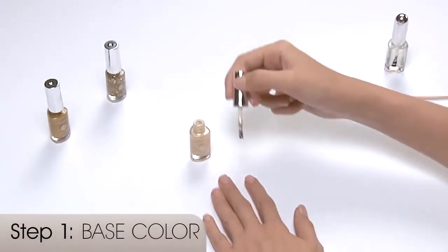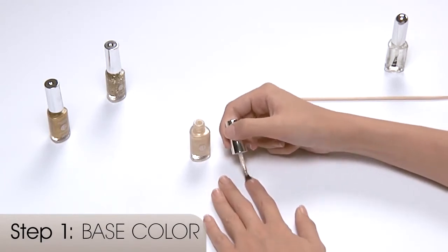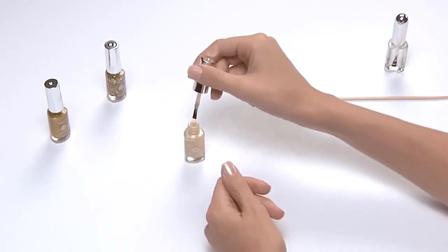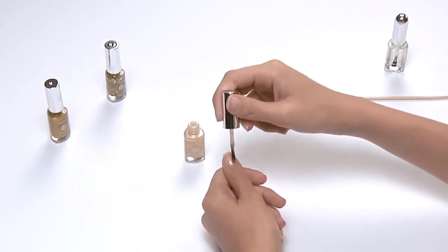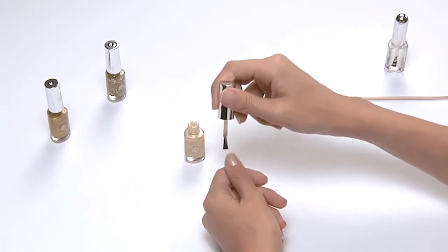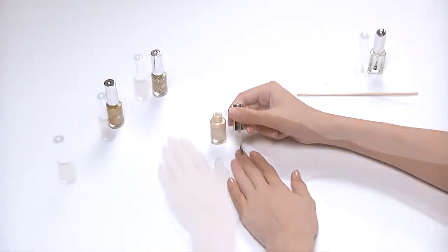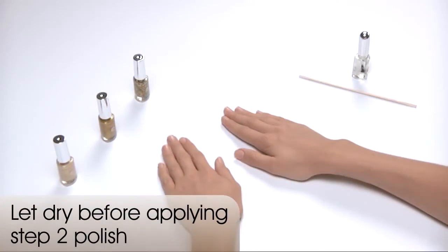Step 1, base color. Apply two coats of Step 1 polish to entire nail. You can apply this step to all nails as if you were doing a traditional polish manicure. Let dry before applying Step 2 polish.